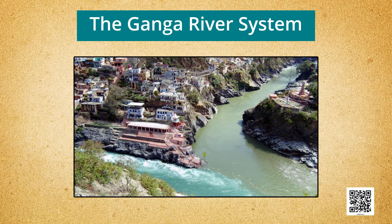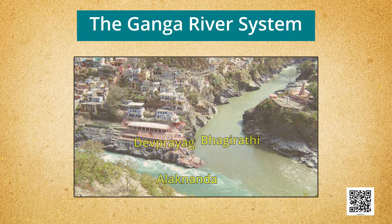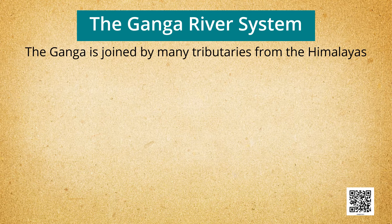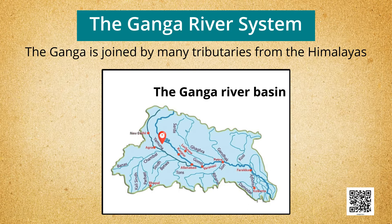Now we move to the Ganga River System. The headwaters of the Ganga, called the Bhagirathi, are fed by the Gangotri Glacier and joined by the Alaknanda at Devprayag in Uttarakhand. At Haridwar, the Ganga emerges from the mountains onto the plains. The Ganga is joined by many tributaries from the Himalayas, a few being major rivers such as the Yamuna, Ghaggar, Gandak, and Kosi. The river Yamuna rises from the Yamunotri Glacier in the Himalayas.